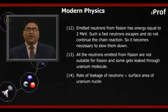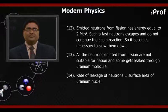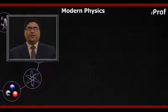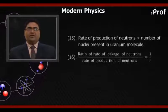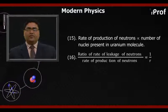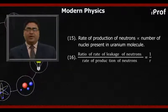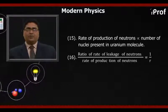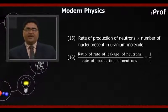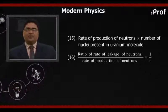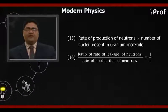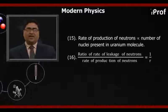Surface area of uranium nuclei. Rate of production of neutrons is proportional to the number of nuclei present in the uranium molecule, that is proportional to R cube. Rate of leakage of neutrons is proportional to the surface area of uranium nuclei, that is proportional to R square.